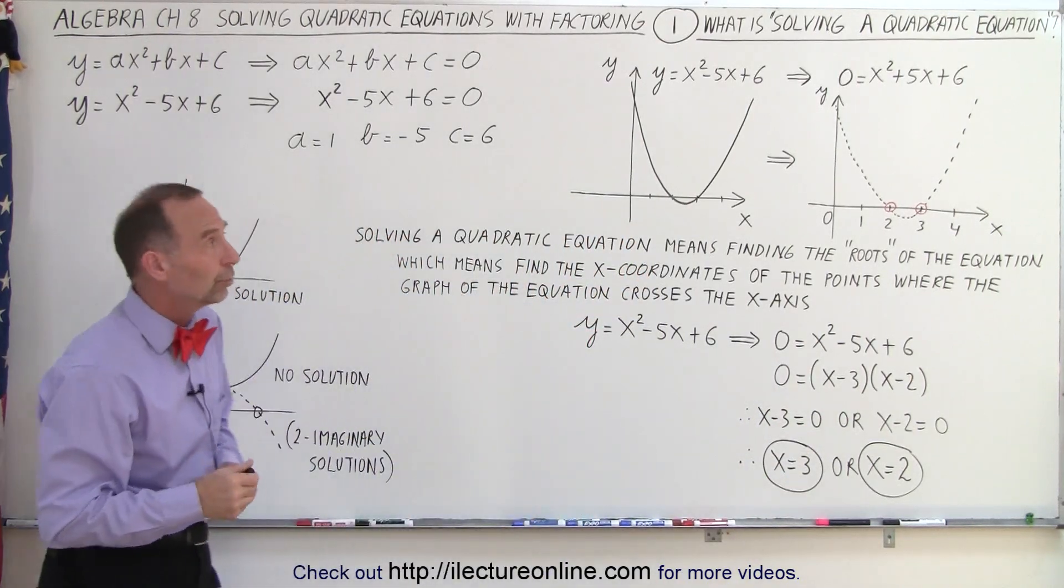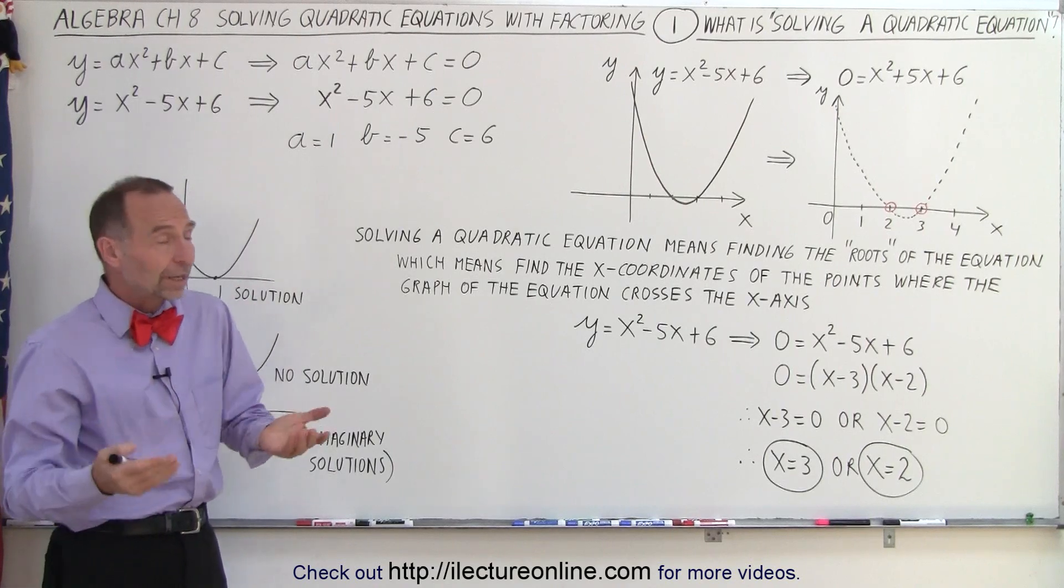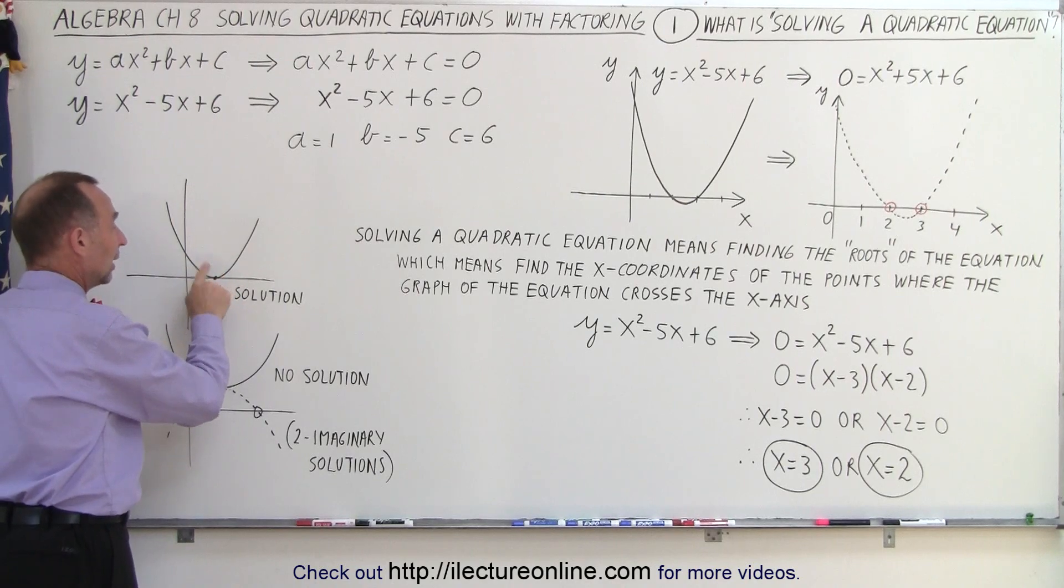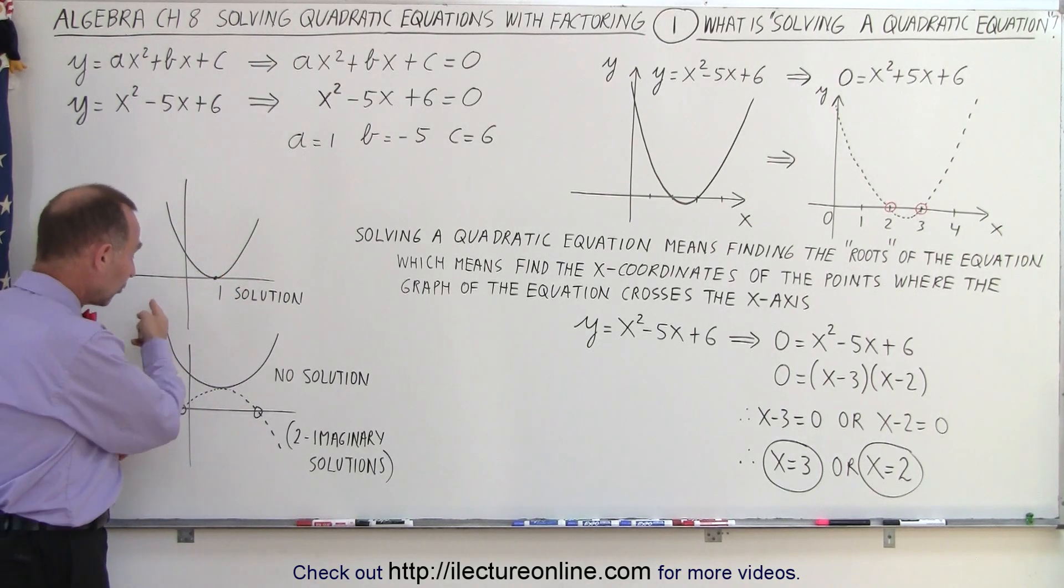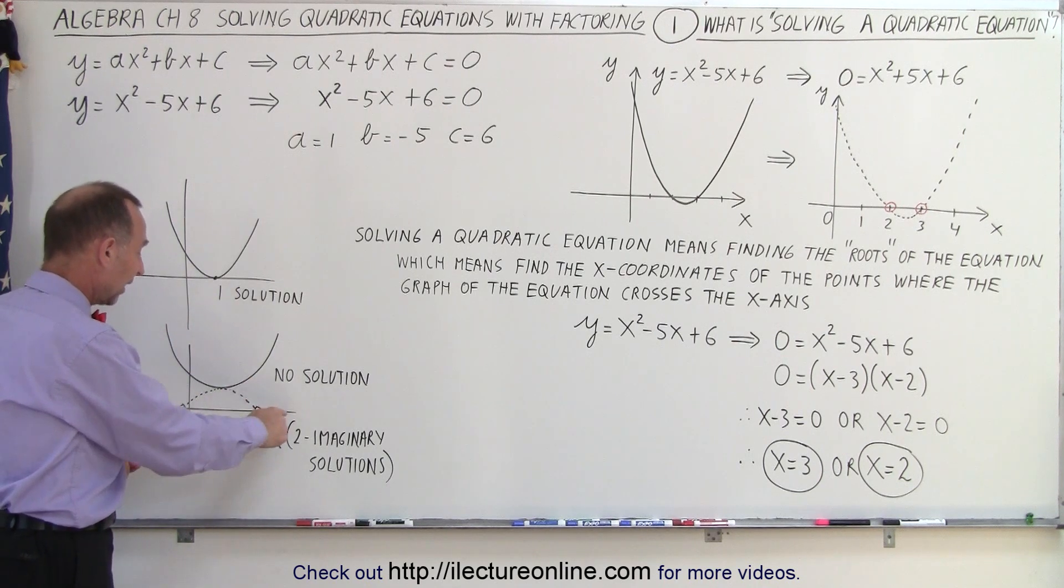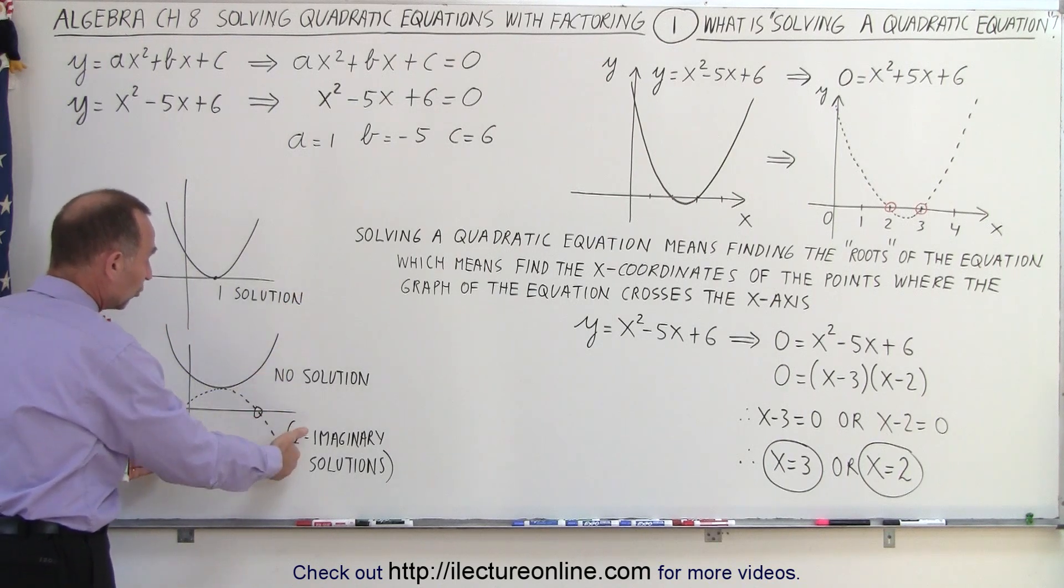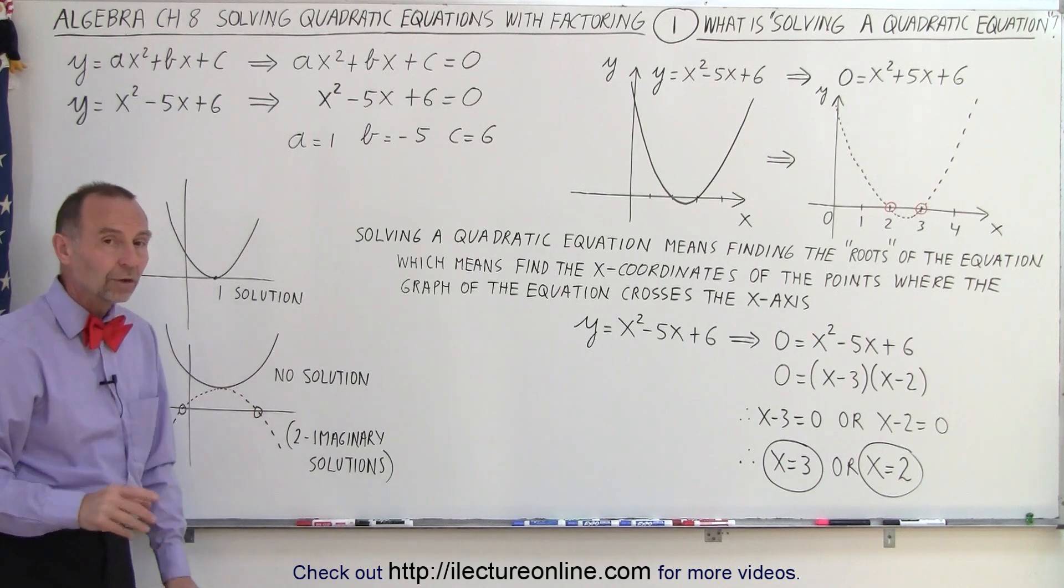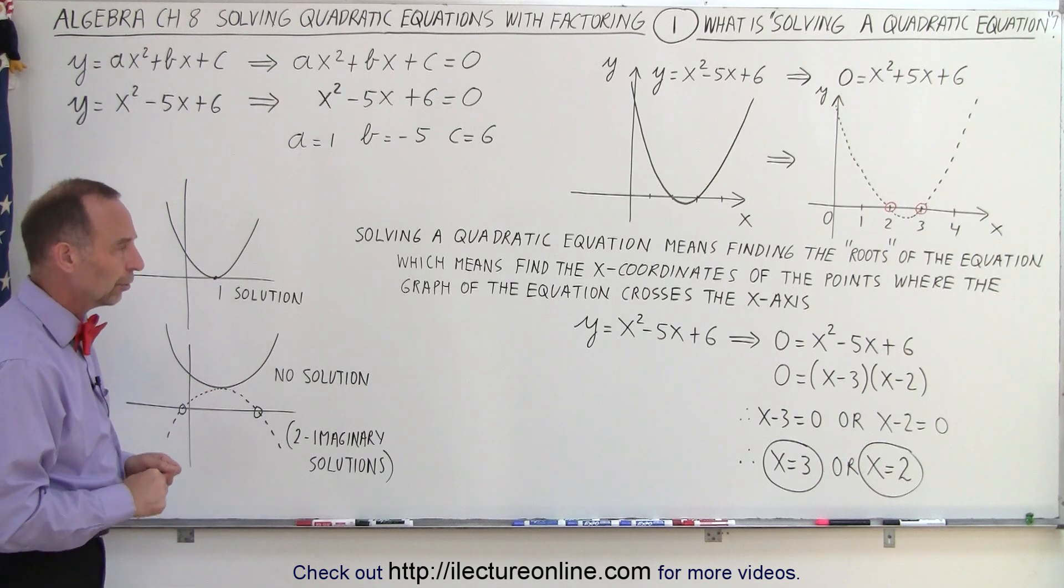Now, there are occasions where there may only be one solution, where the graph just barely touches the line, only in one place, and therefore there's only one solution. Or sometimes the graph doesn't touch the x-axis, so there are really no solutions. However, if we then draw a mirror image of the graph, we simply flip it over, and then we see where the mirror image crosses the x-axis, those are what we call two imaginary solutions. And we'll talk about that later in another chapter.